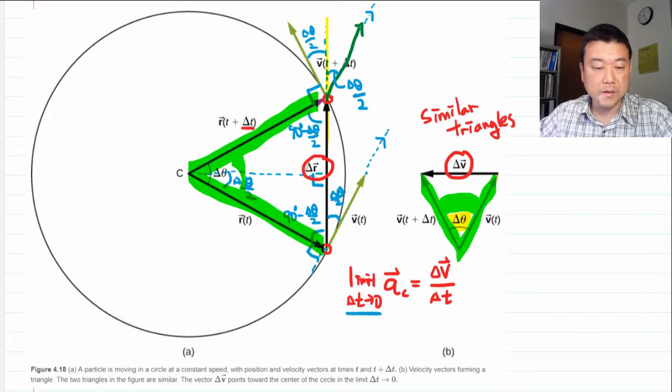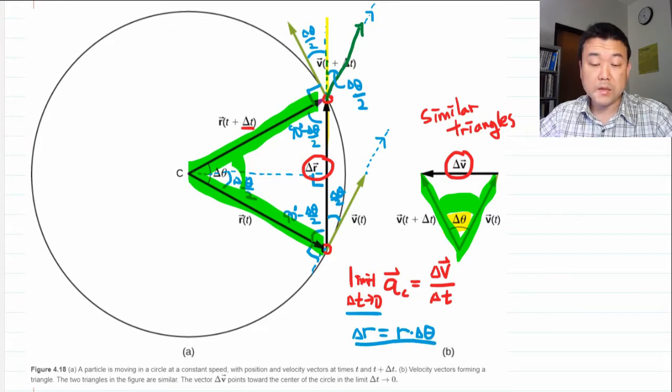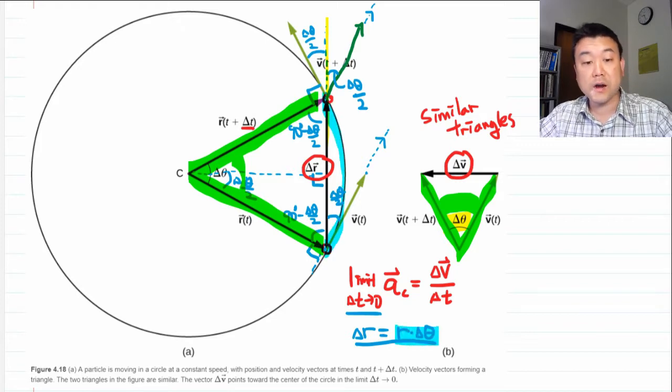And a big part of this ends up being somewhere along the line saying that delta R, the magnitude of the displacement, is equal to R (radius of circle) times delta theta, which is true only when delta theta is very small. Because otherwise, this expression is actually giving you the arc length. So only for small angles, you can say that arc length is about the same as delta R.